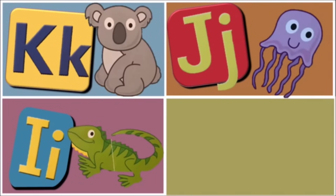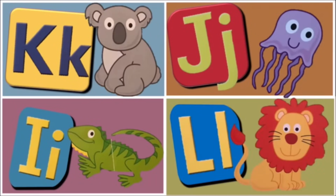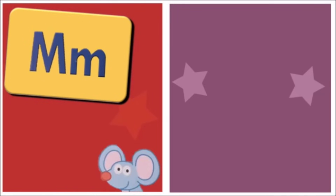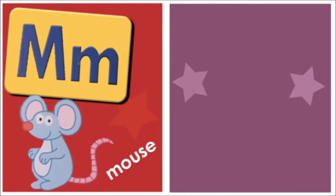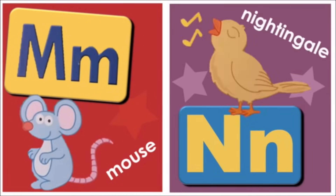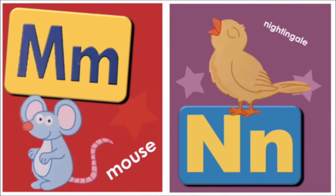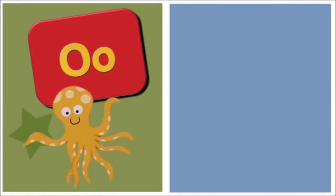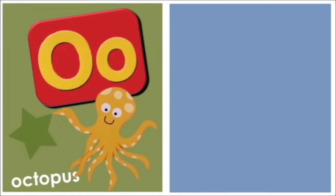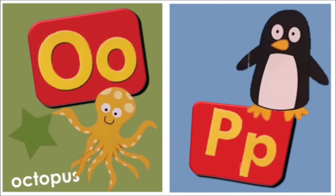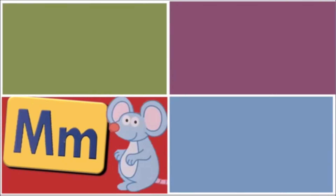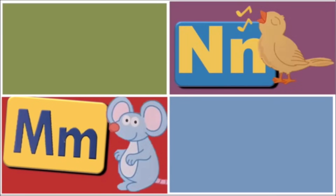M is for Mouse. N for Nightingale. O for Octopus. P for Penguin. These are the words from the alphabets, let us sing together.